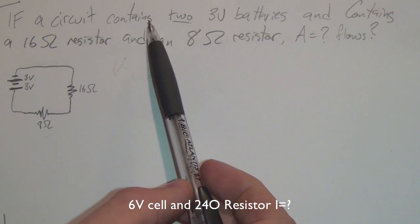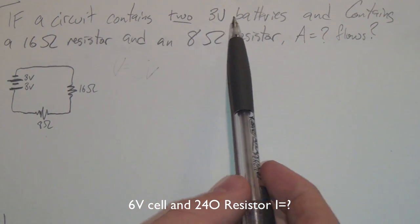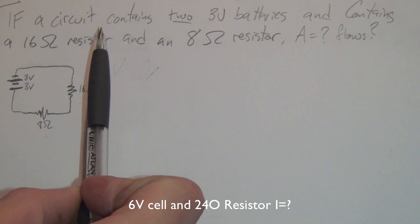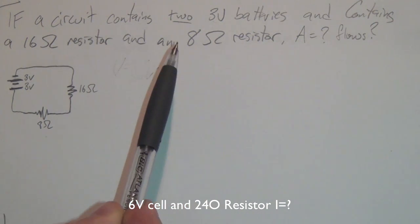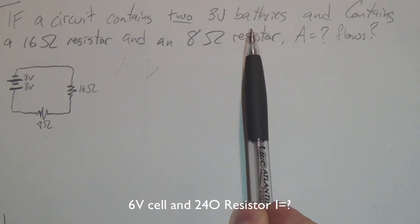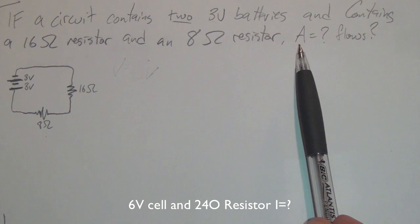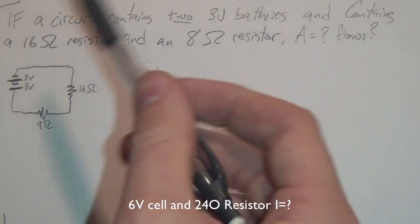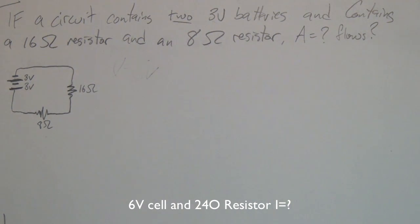If a circuit contains two 3V batteries and contains a 16 ohm resistor and an 8 ohm resistor, then flowing through the circuit, how many amps would you find? Okay, that's the question. I hope you got that.